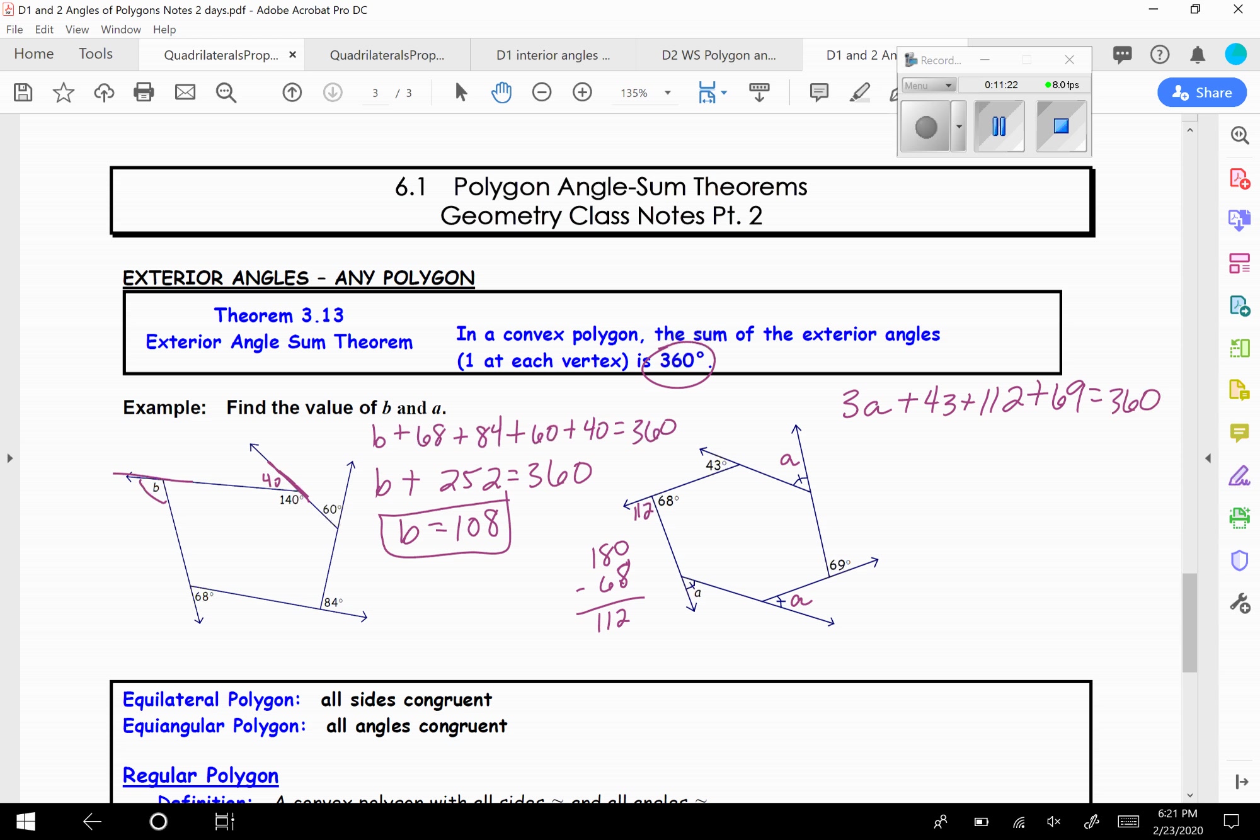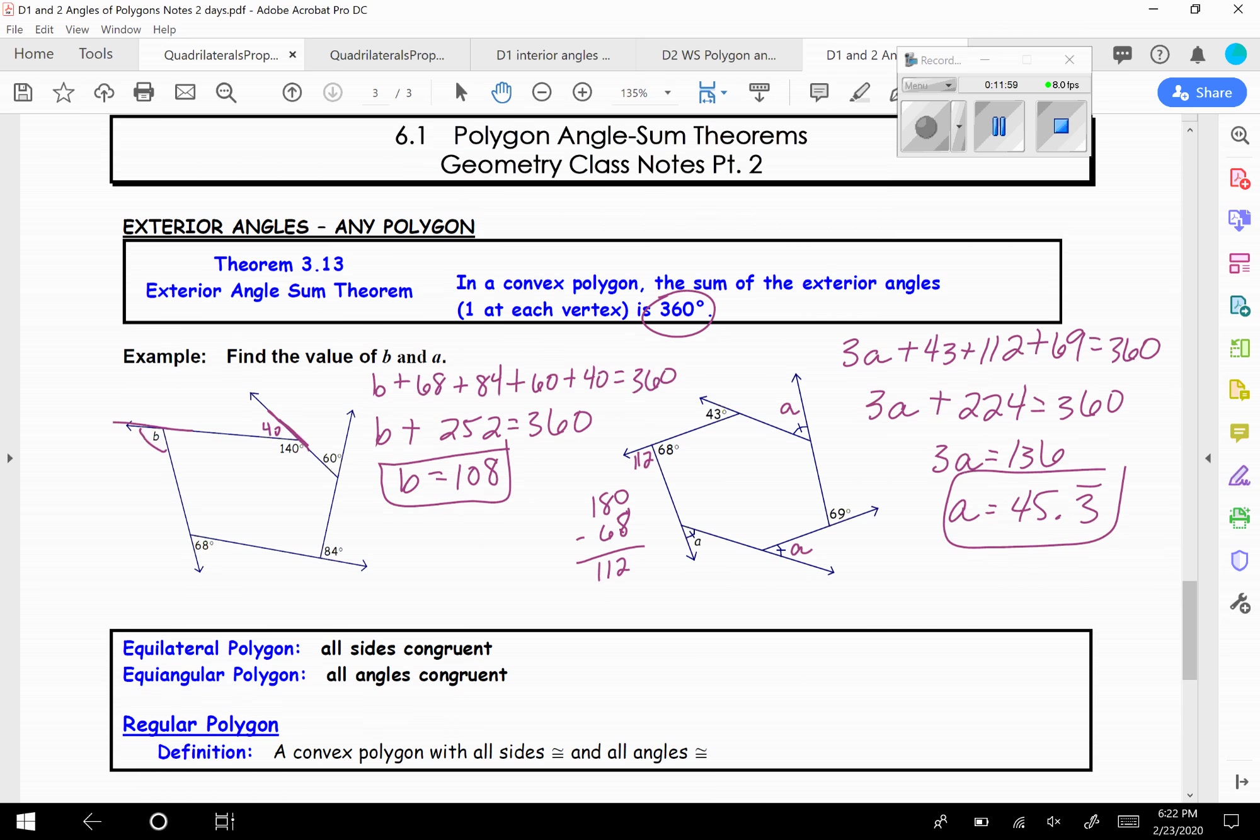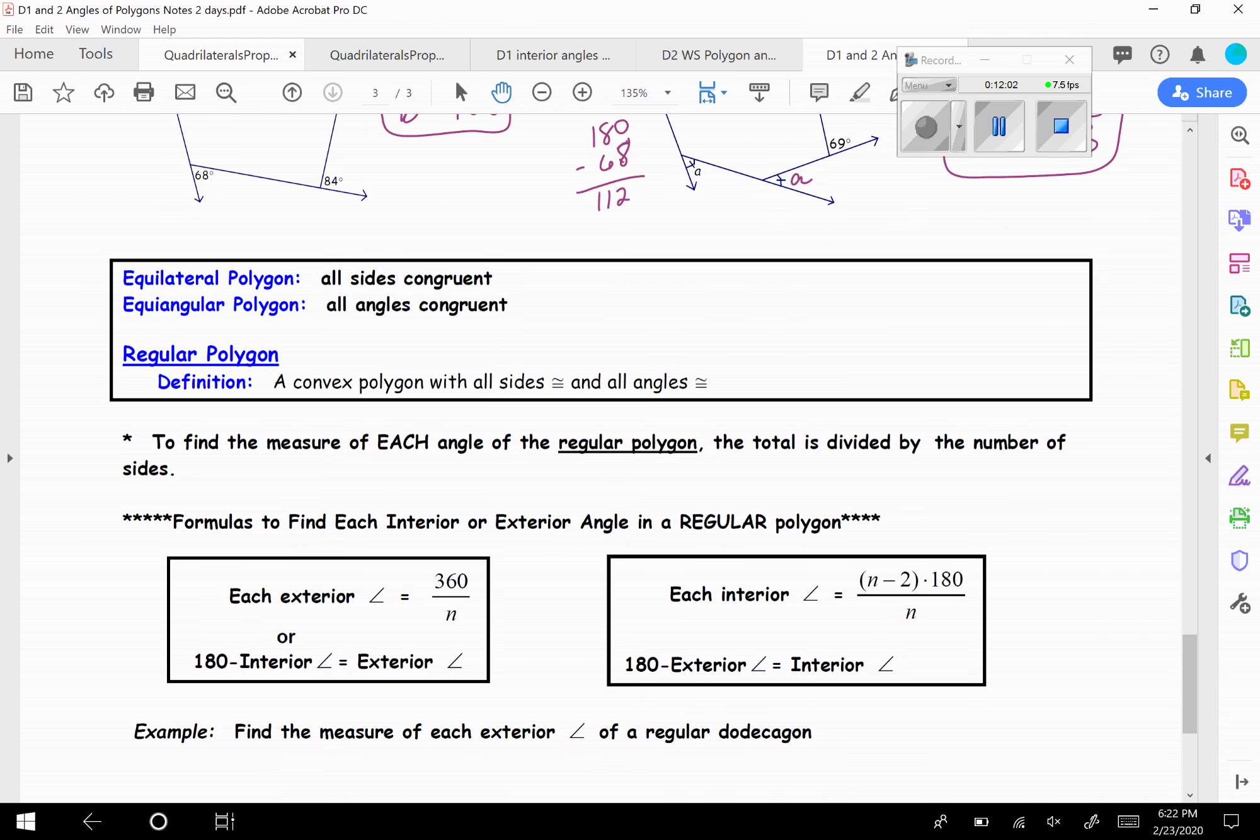So 3A plus 69, and again, they're exterior angles. So they should all add up to 360, no matter what polygon you have. So we have 3A plus, we have 43 plus 112, 12 plus 69, that's 224. So 360 minus 224, we get 136. So 3A is equal to 136. And divide that by 3. And you'll get A is 45.3 repeating. So there we go. So yes, it is okay to get a decimal.